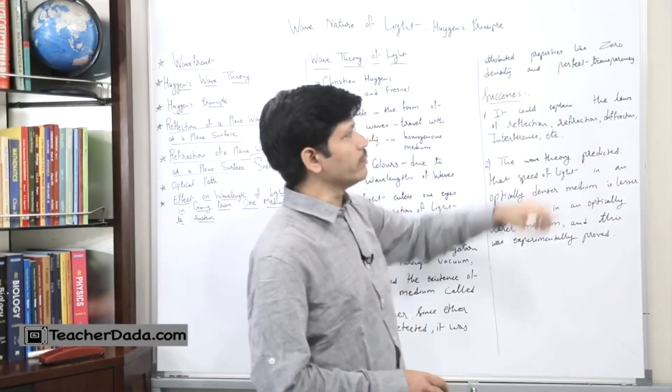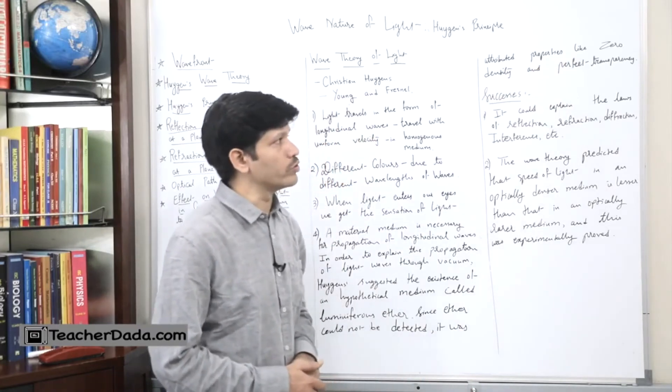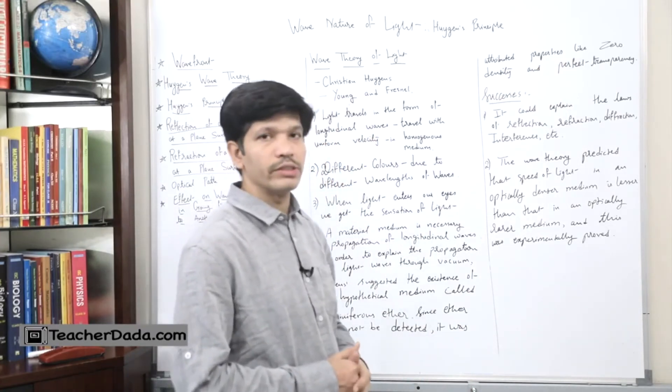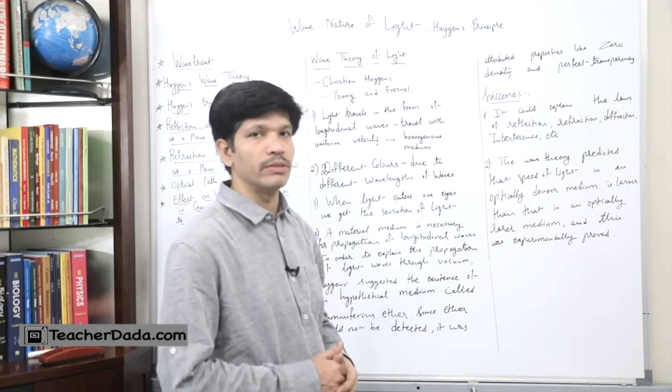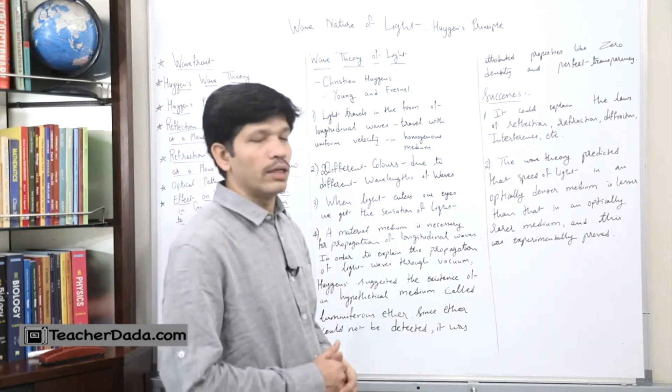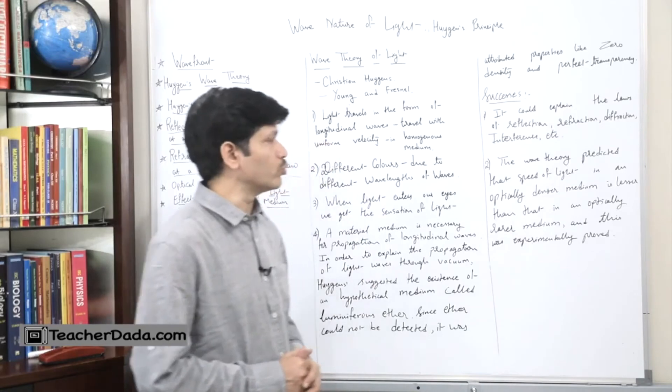Properties like zero density and perfect transparency. It was said that there is no density, the medium is not denser at all, and it is perfectly transparent. Due to these two factors, light can travel through the vacuum.